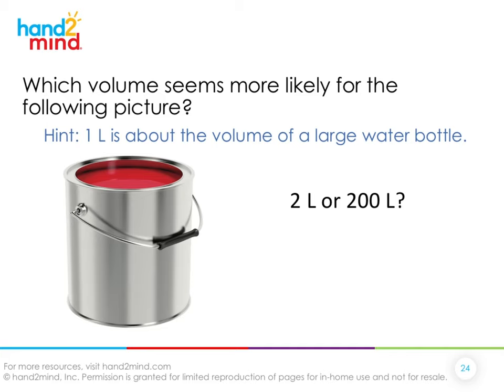Now I'm going to challenge your knowledge. Which volume seems more likely for this picture? One liter is about the volume of a large water bottle. Looking at this paint can — do we think it has two liters or 200 liters? Could you fit two large water bottles in that paint can, or 200? That would have to be a really big paint can to fit 200, so it's probably two liters.